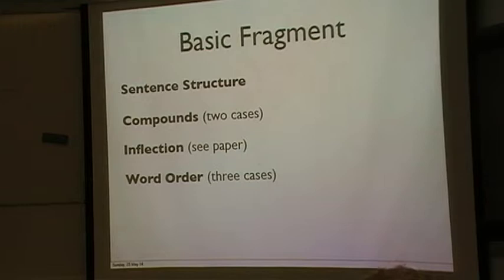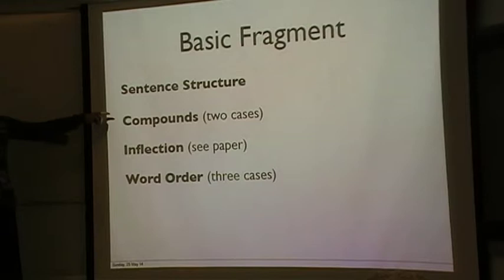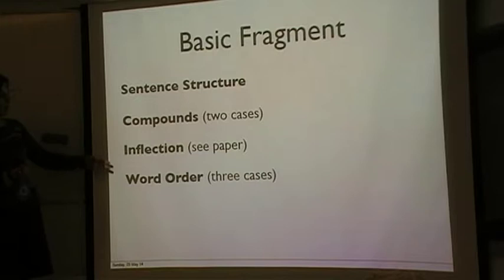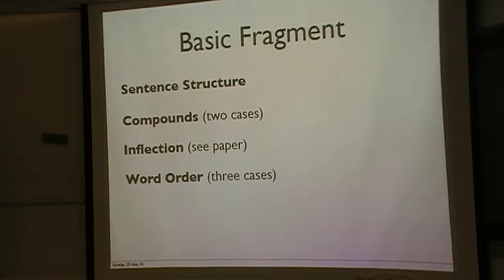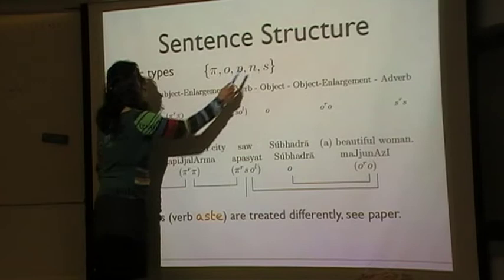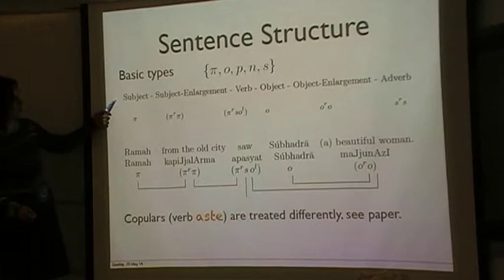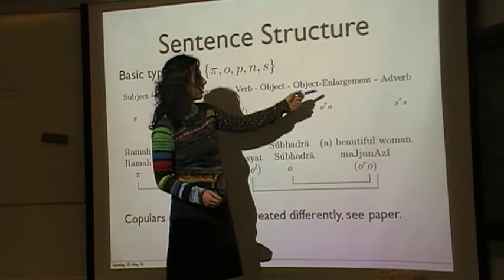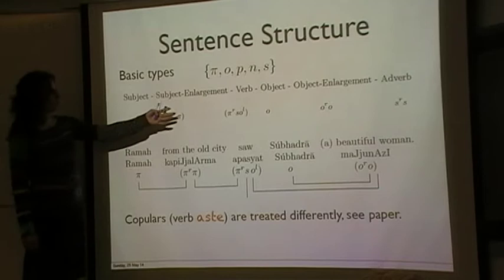Right, okay, so the basic fragments of Sanskrit, I'm going to consider sentence structure, compounds. Sanskrit is known for having lots of different compounds, 16 different types. So I've looked at four cases in the paper and I'm going to quickly show two cases here. It's got a lot of inflections, gender, number, and six cases. So I'm not going to talk about this here. If you want to have a look at the paper. And then I'm going to talk about word order alternation for three cases. Many more are in the paper. Right, so the basic types, we fixed the following set of basic types. Pi for subject, O for object, P for predicate, N for noun phrase and S for sentence. And then the general structure of a Sanskrit sentence is as follows. Subject, subject enlargement, verb, object, object enlargement and adverb.